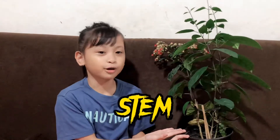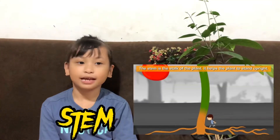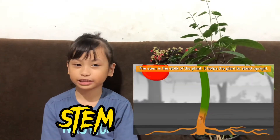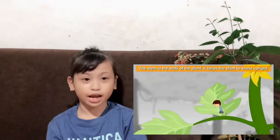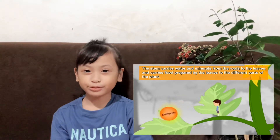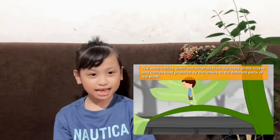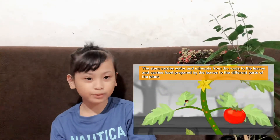The stem performs much vital work for the whole plant. They support the plant and hold it up towards the light. The stem is the plant's transportation system. It receives water and minerals from the root and distributes it to all parts of the plant.